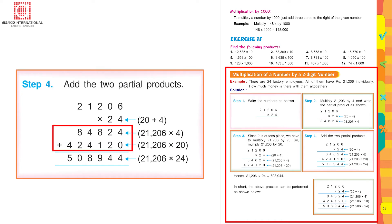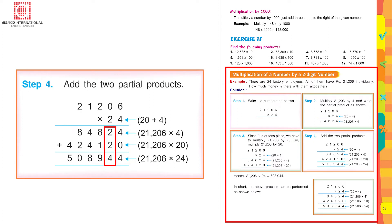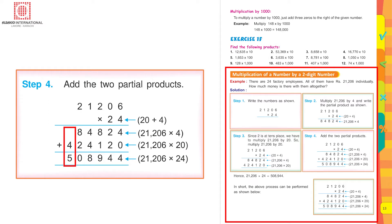Step four: add the two partial products. Add 84824 and 424120. Four plus zero is four, two plus two is four, eight plus one is nine, four plus four is eight, eight plus two is ten — write zero and carry forward one, four plus one is five. The final answer is 509088.